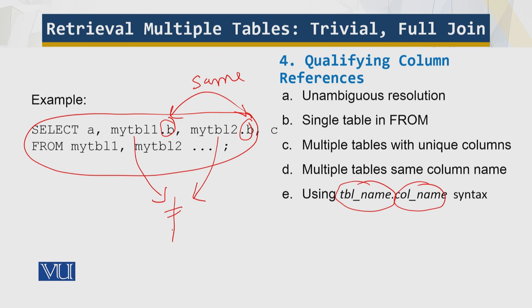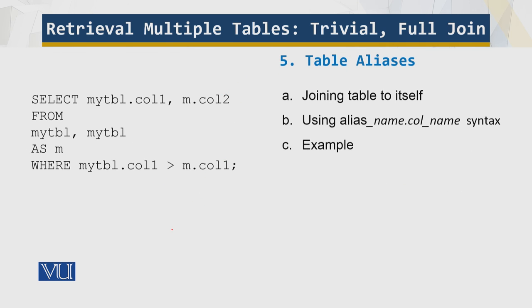Table aliases. Sometimes a table name qualifier is not sufficient to resolve a column reference. For example, if you are joining a table to itself, you are using it multiple times within the query and it doesn't help to qualify a column name with the table name because the column names are same. In this case, table aliases are useful for communicating your intent. You can assign an alias to any instance of the table and refer to columns from that instance as alias underscore name dot column underscore name syntax.